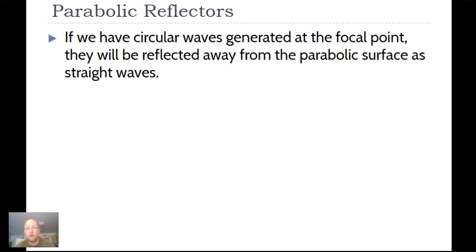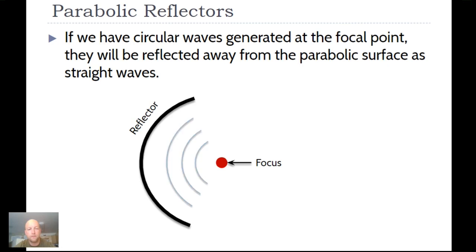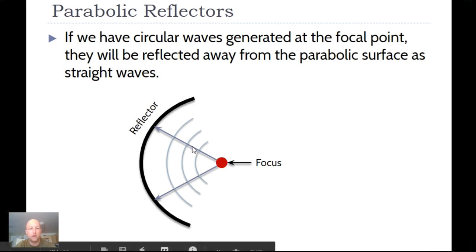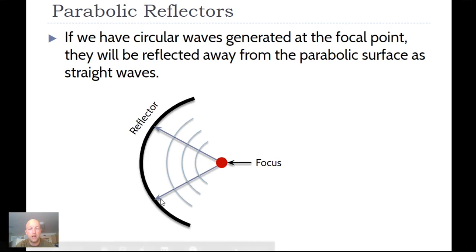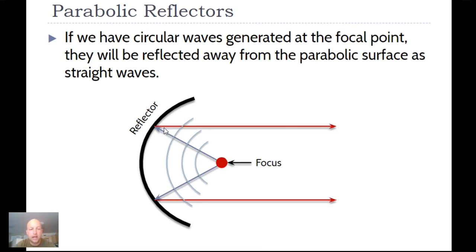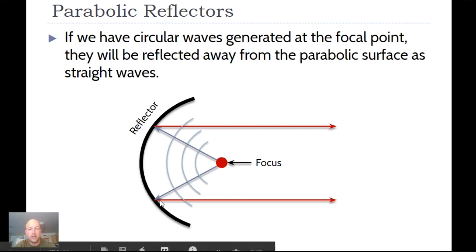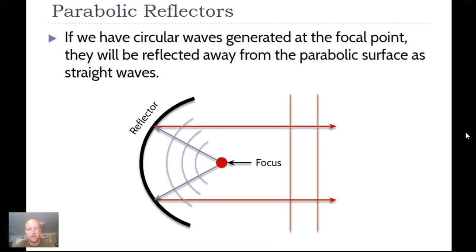If we have circular waves generated at the focal point, they will be reflected away from the parabolic surface as straight waves — almost the opposite case. The circular waves originate at the focal point, and at each point of the parabola the angle of incidence equals the angle of reflection. Following this through, the reflected rays all become parallel, producing a straight wave traveling to the right.